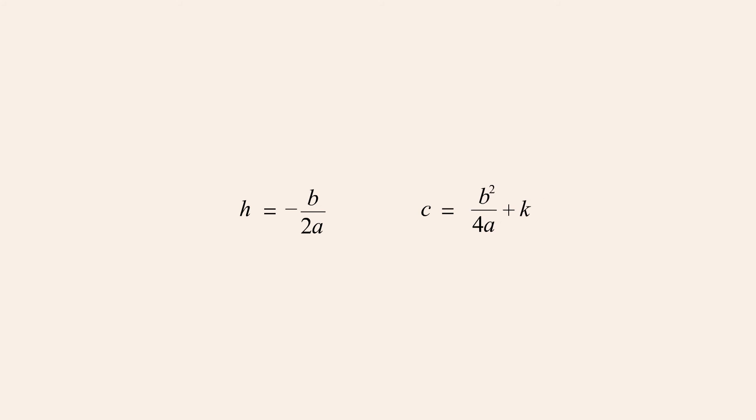Finally, moving the term b squared over 4a to the opposite side of the equation produces the formula for k given known values for a, b, and c.